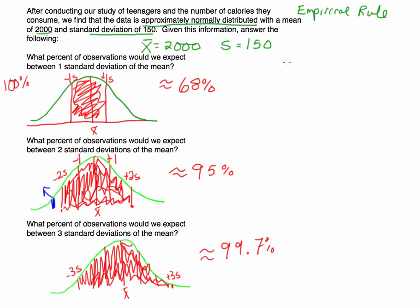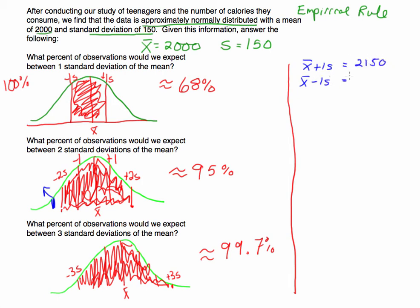Let's go back and plug the information in. The mean is 2,000 and the standard deviation is 150. For the 68% range, taking the mean plus 1 standard deviation gives an upper limit of 2,150, and the mean minus 1 standard deviation gives a lower limit of 1,850. We would expect 68% of observations to be between these two numbers. For the 95% range, adding and subtracting 2 standard deviations gives us 1,700 up to 2,300 — which we already calculated as the usual range.